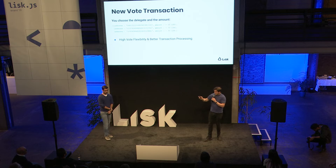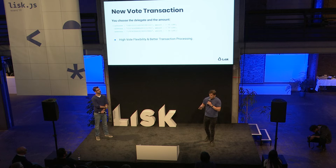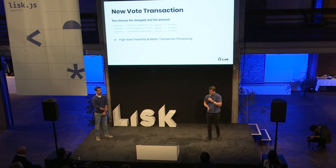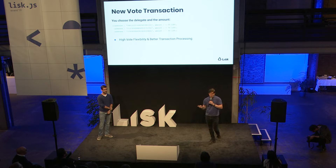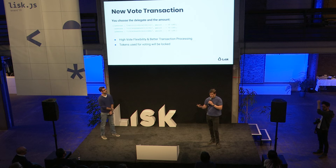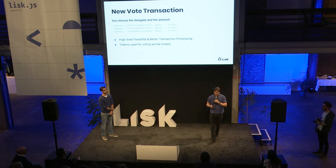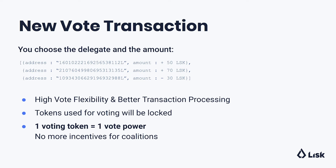However, if I vote for Iker with 50 LISC and then want to use my tokens for something else, how can I do that? The solution is to lock the tokens. In the future, when you use tokens for voting, they are locked in your vote. If I use some LISC to vote for Iker, I cannot use the same LISC to vote for another delegate or for myself. This introduces a new paradigm shift in LISC: one voting token, one vote power.